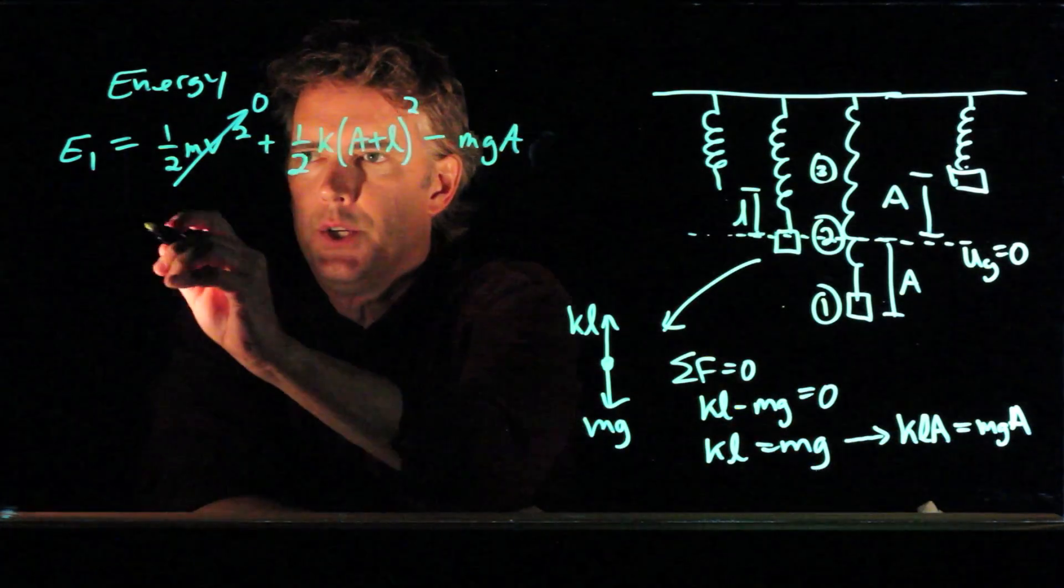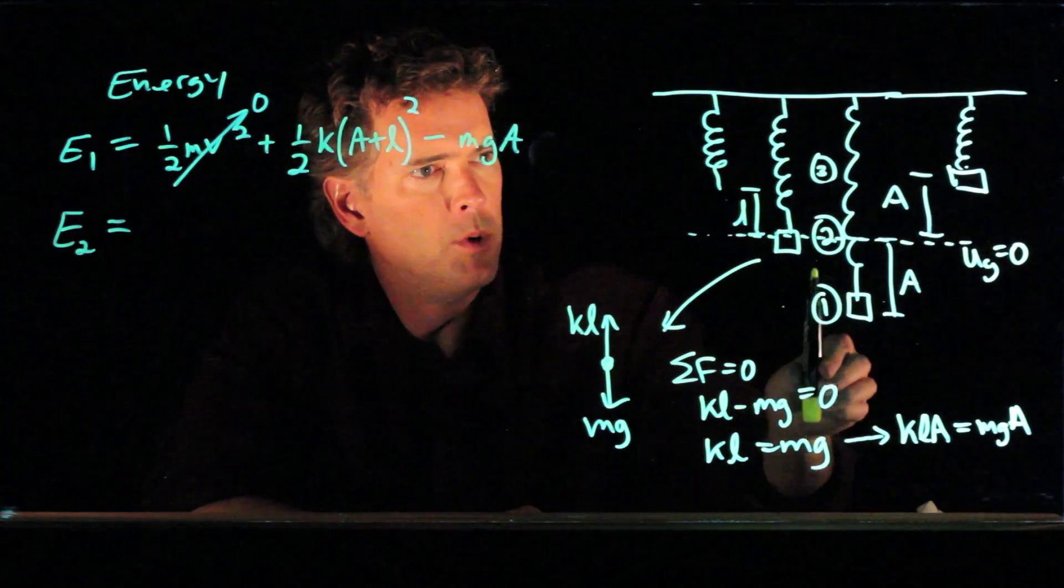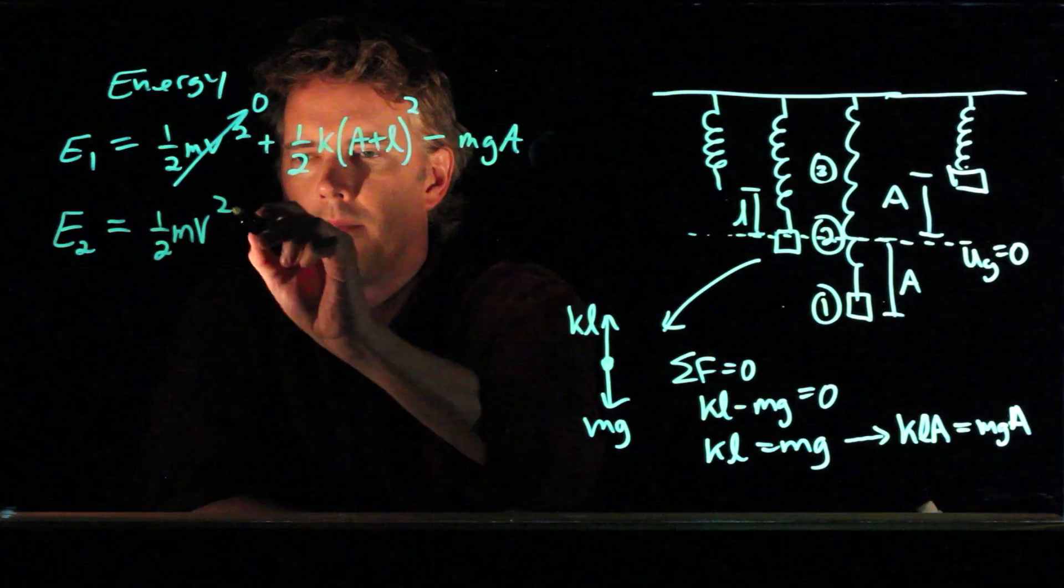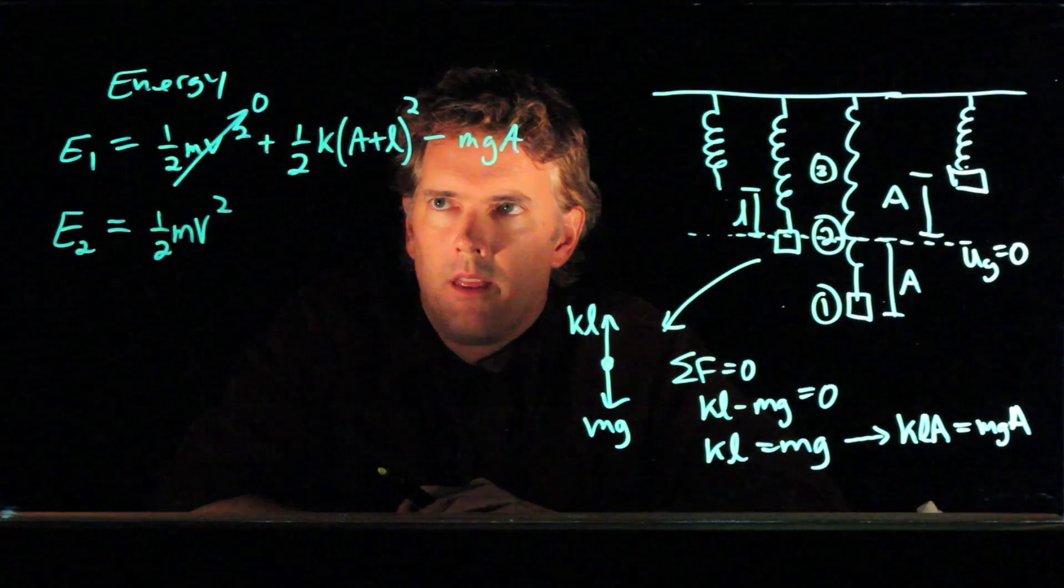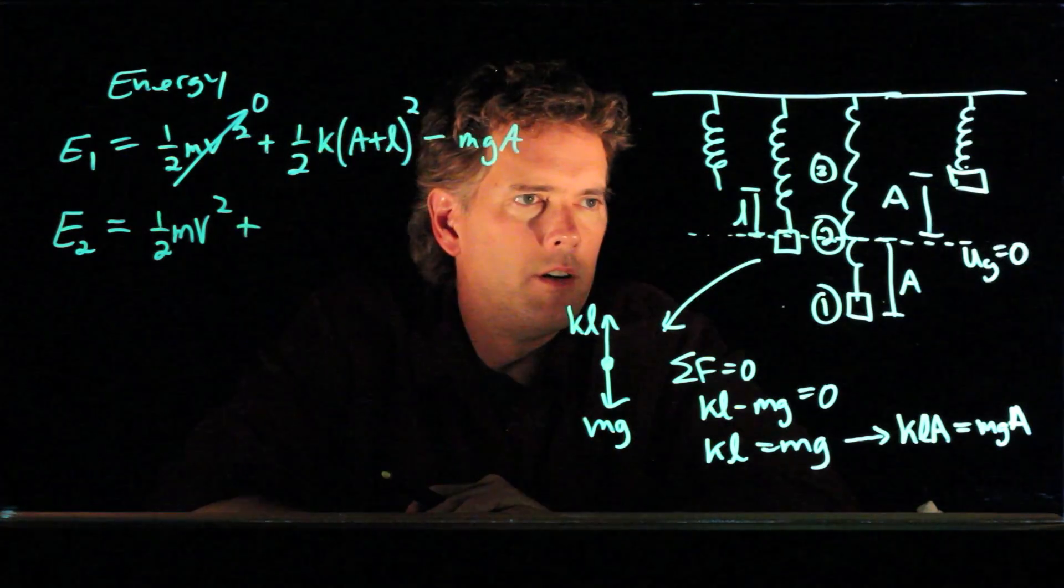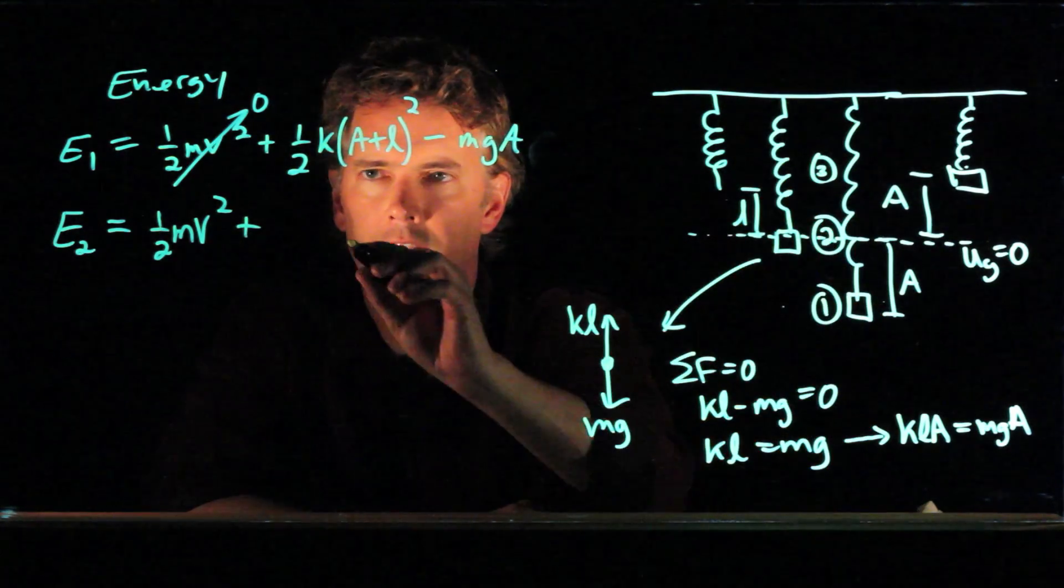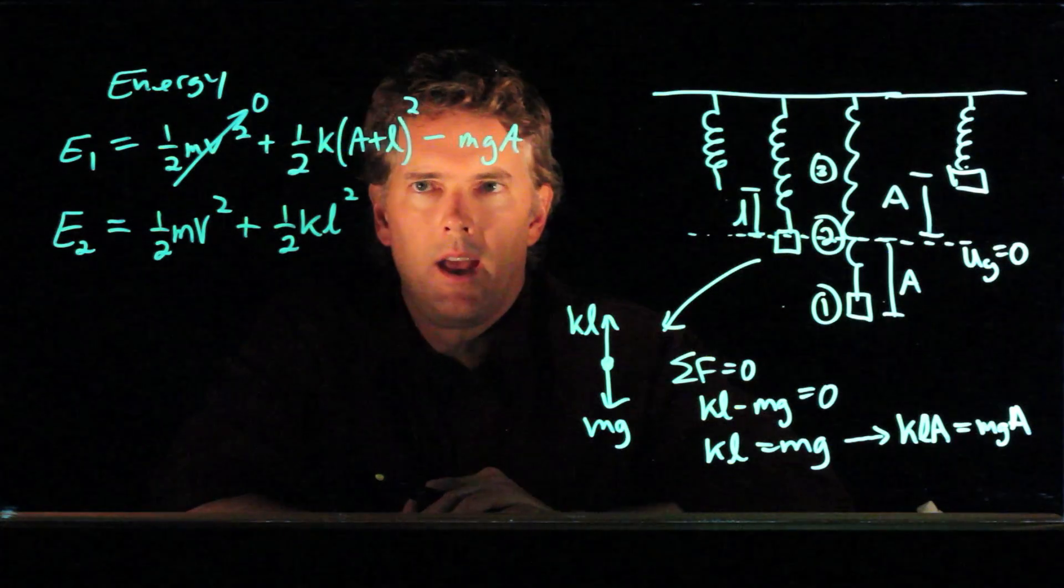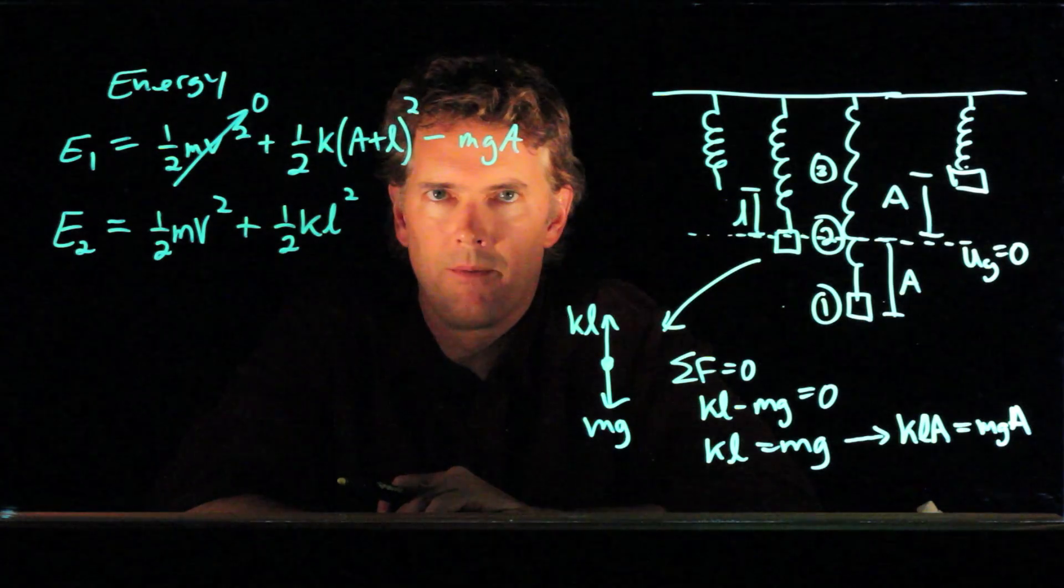All right, what about E2? E2 is when the block is moving back upwards. It has kinetic energy at that point. We suspect that's going to be the maximum speed, but we're not totally sure yet. It also has a little bit of spring potential energy because even when it's at position two, that spring is still stretched a little bit. It's stretched by L. And we have zero potential energy due to gravity because we said that's where it equals zero.